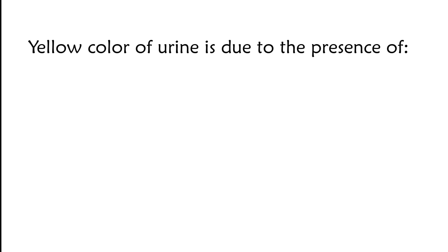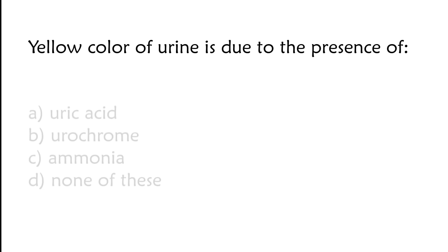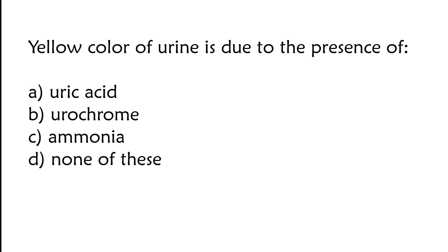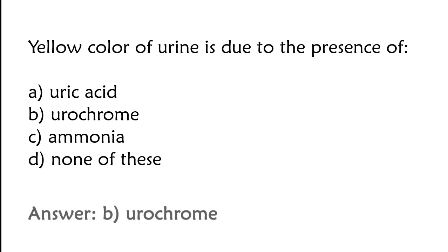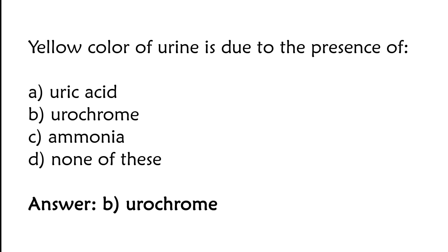Yellow color of urine is due to the presence of: uric acid, urochrome, ammonia, or none of these. The correct answer is option B. Yellow color of urine is due to the presence of urochrome.